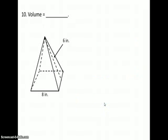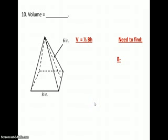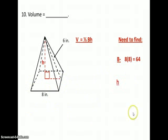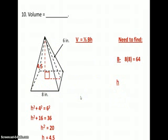Finally, number 10: find the volume of a square pyramid. The formula is one-third base times height. We don't have the height, so we need to find it. The area of the base is 8 times 8 equals 64. To find the height, we draw a right triangle in the center and solve: H squared plus 4 squared equals 6 squared, giving H squared equals 20, so H equals 4.5. Plugging everything into the formula, our answer is 96 cubic inches.